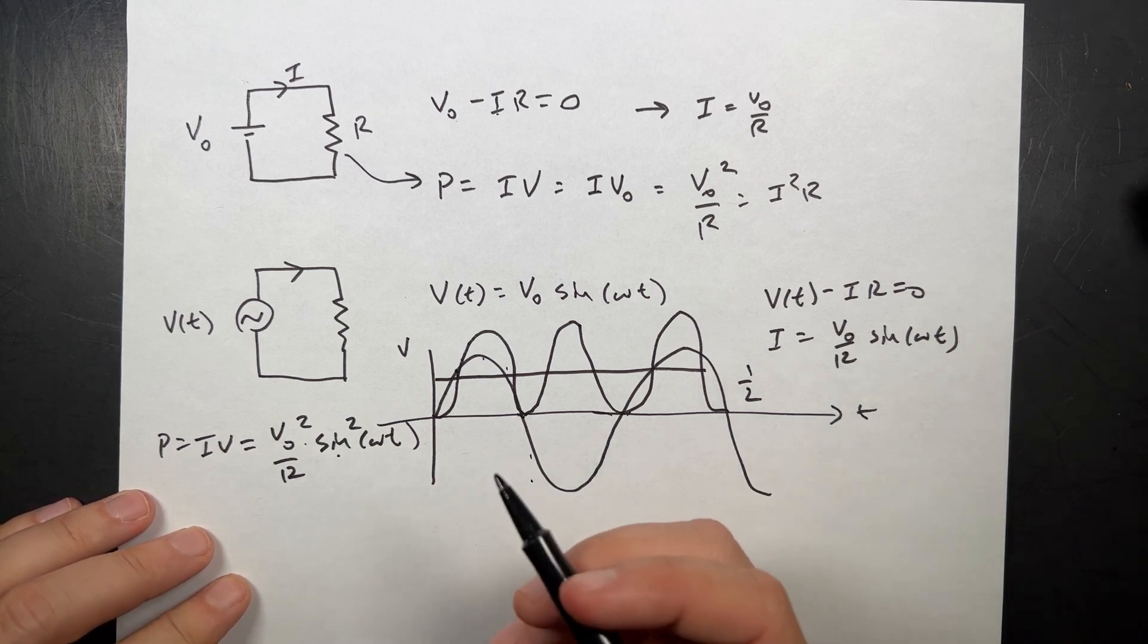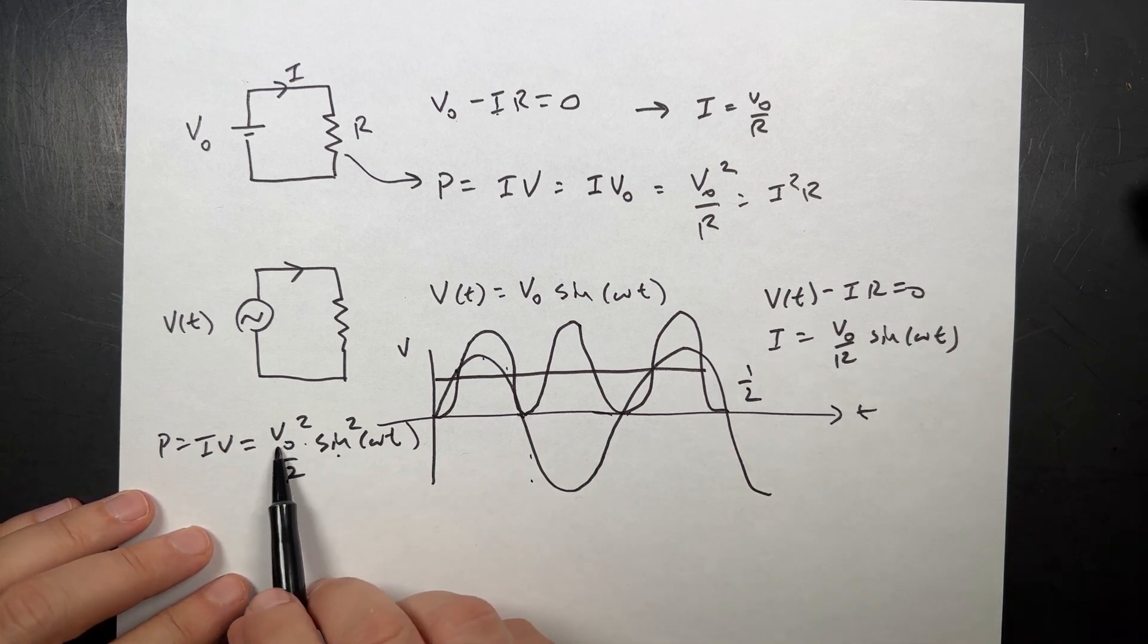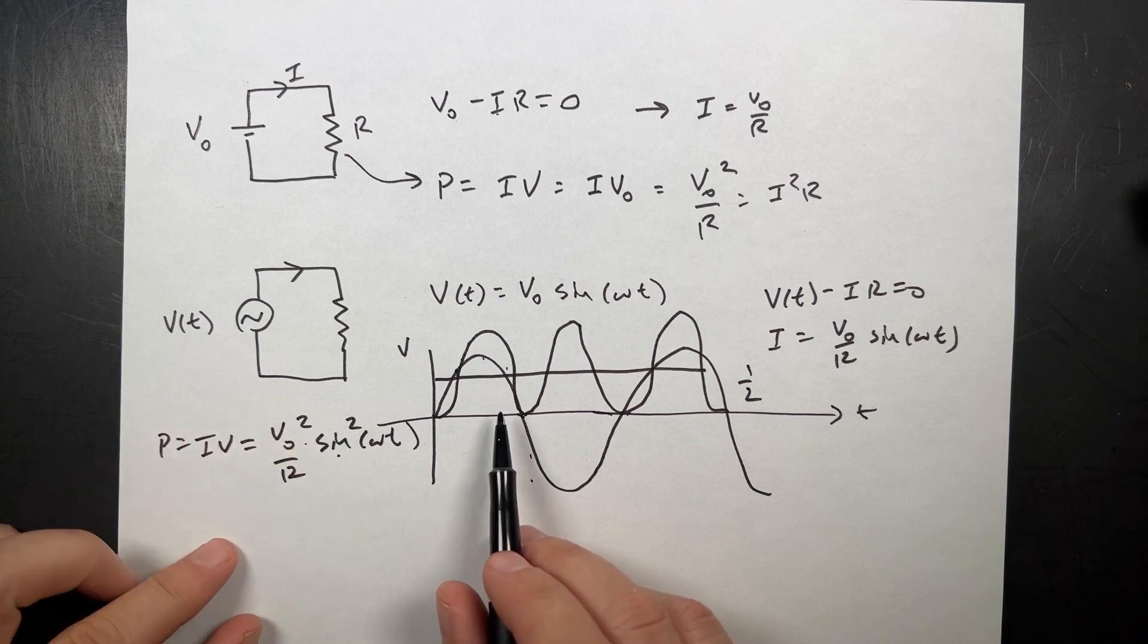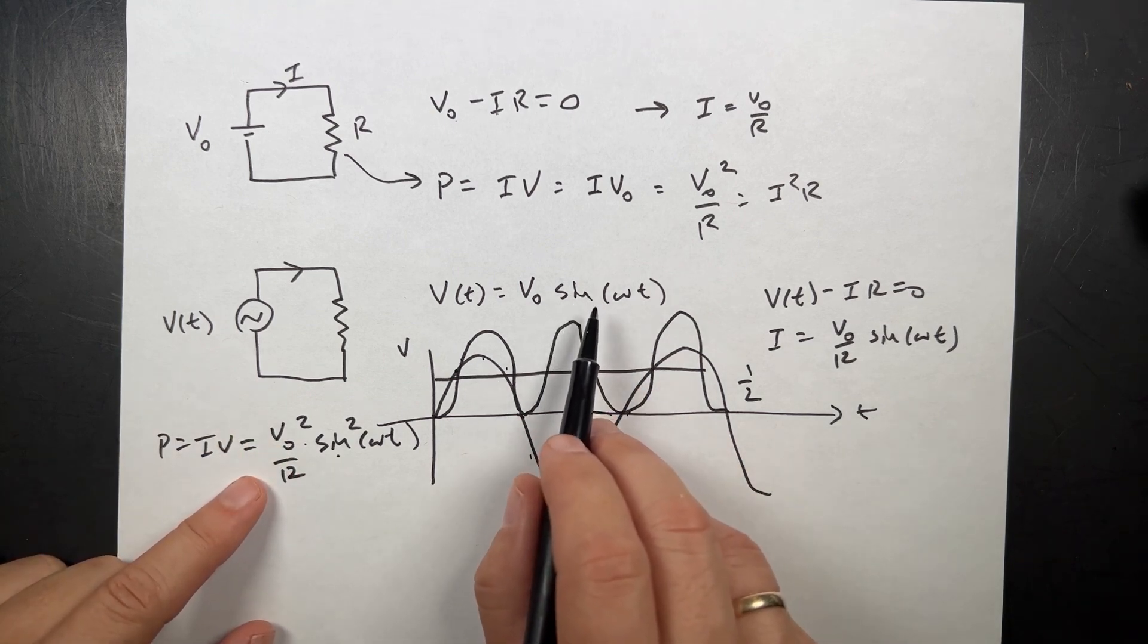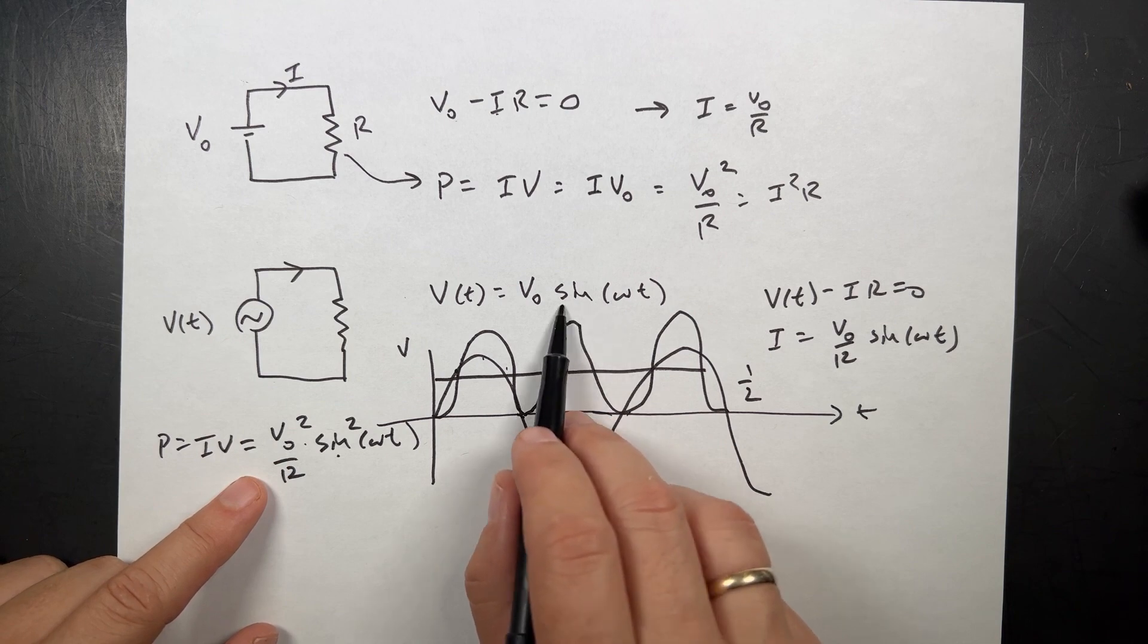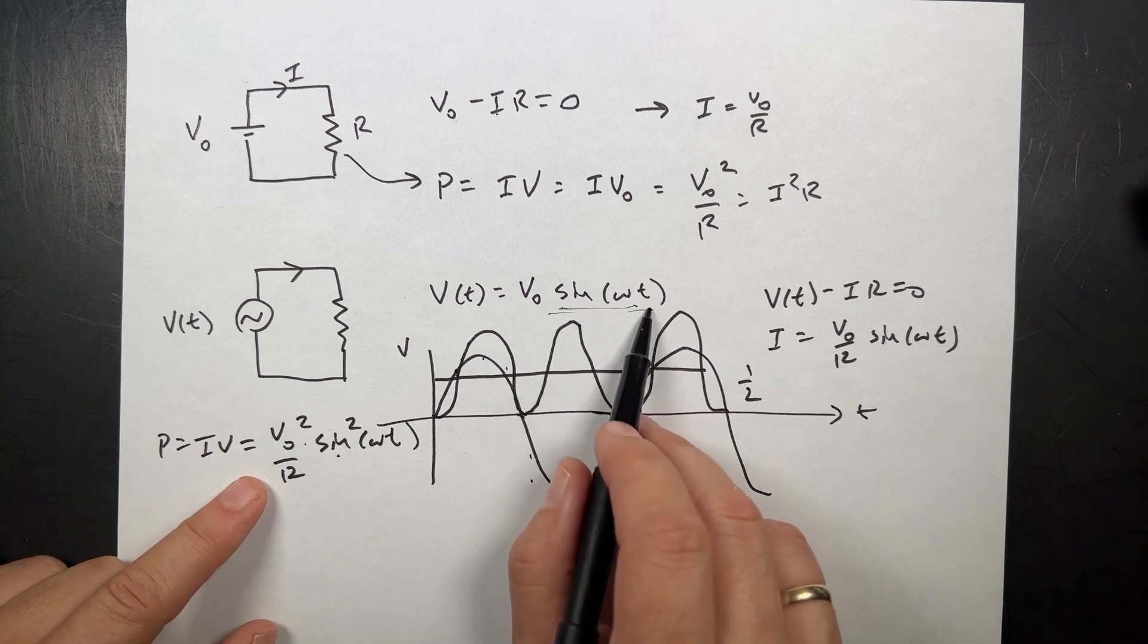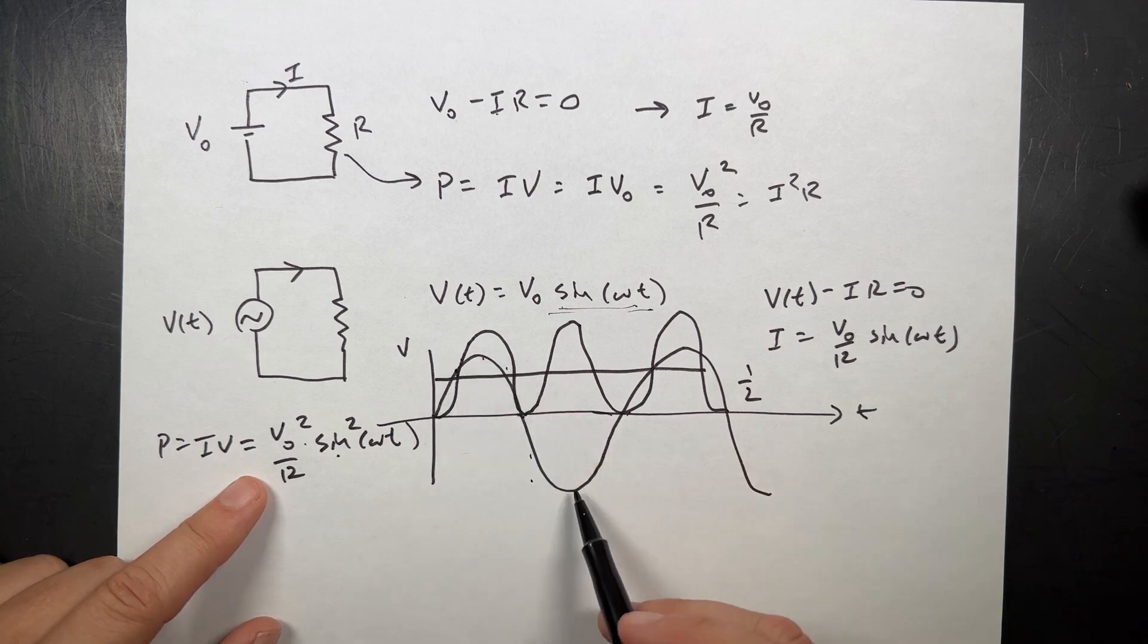And that's where this RMS comes from. Because if I take the square, if I get the voltage, the sine of omega T squared over a period is a half. So what's the average of sine omega T? Well, it's zero because it goes up and down.